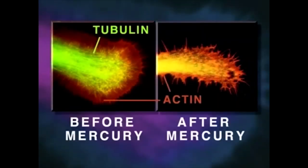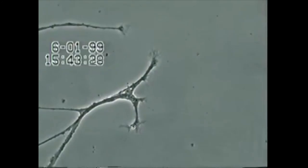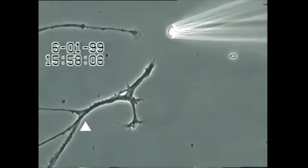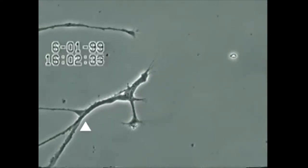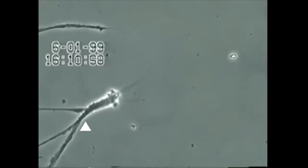Shown here is a neurite growth cone stained specifically for tubulin and actin before and after mercury exposure. Note that the mercury has caused disintegration of tubulin microtubule structure. These new findings reveal important visual evidence as to how mercury causes neurodegeneration. More importantly, the study provides the first direct evidence that low level mercury exposure is indeed a precipitating factor that can initiate this neurodegenerative process within the brain.